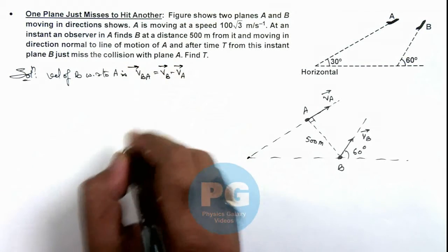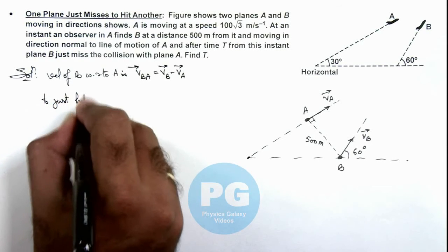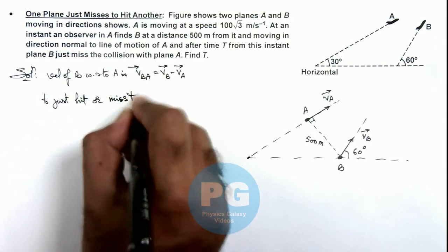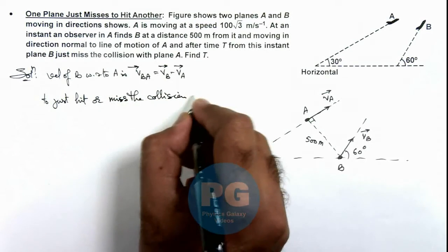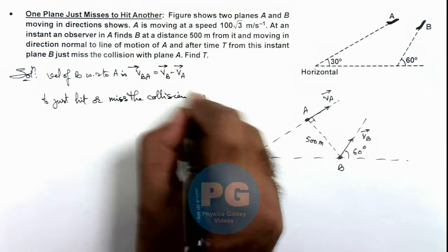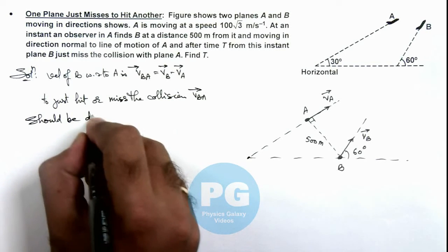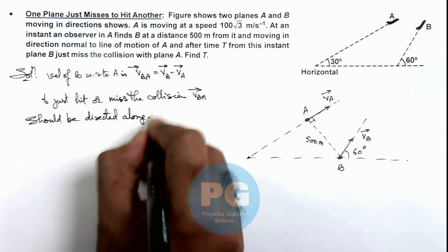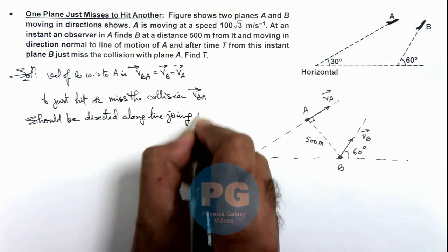And to just hit or miss the collision, vBA vector should be directed along the line joining A and B.